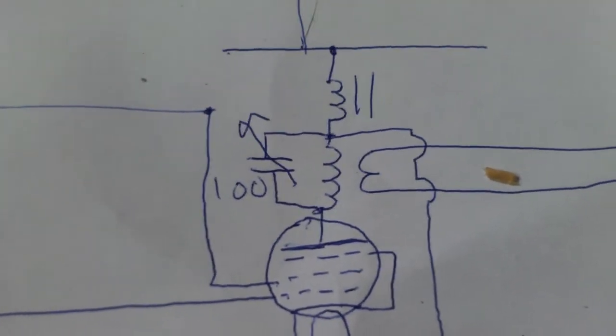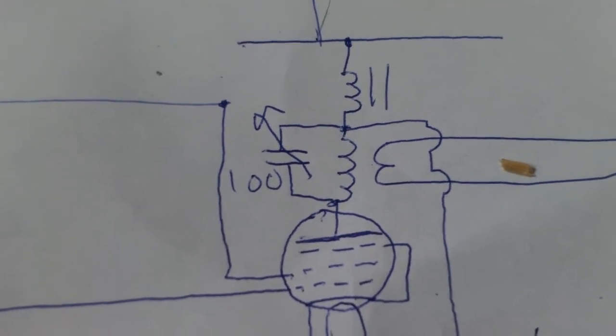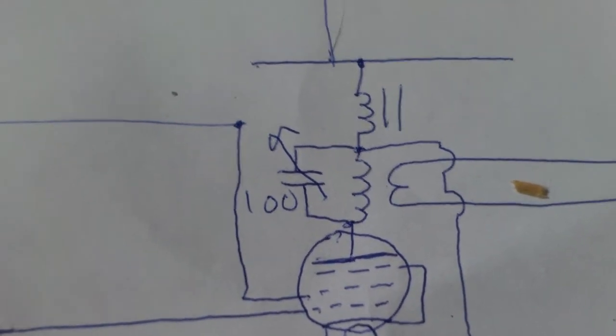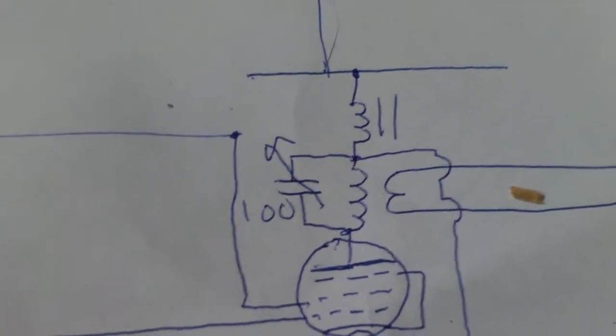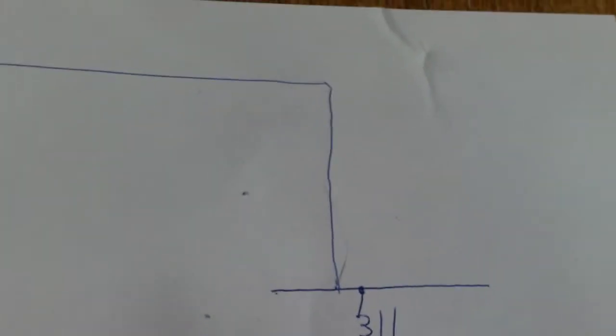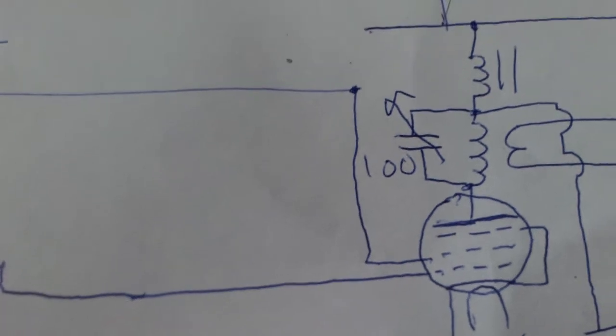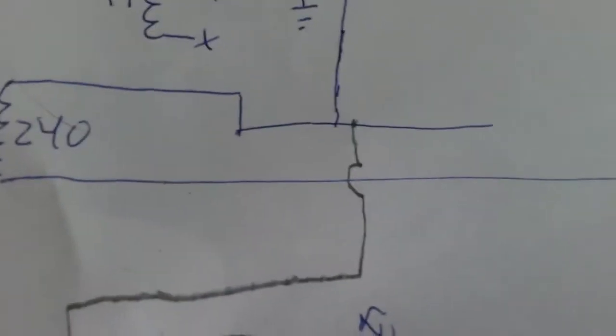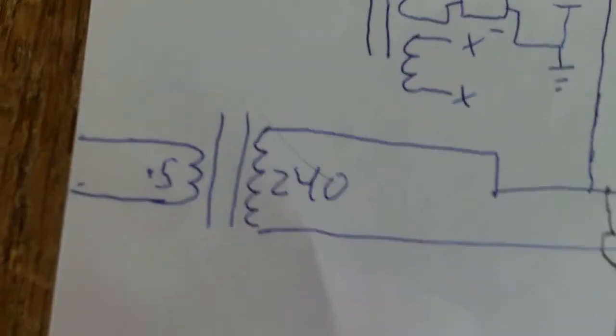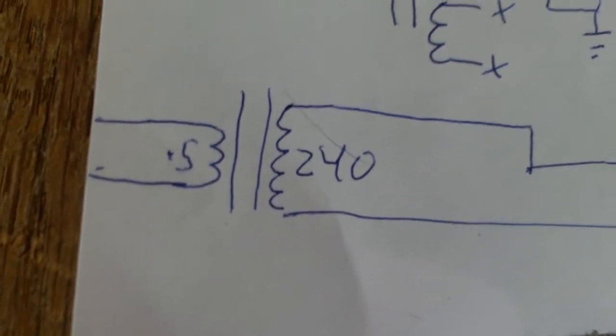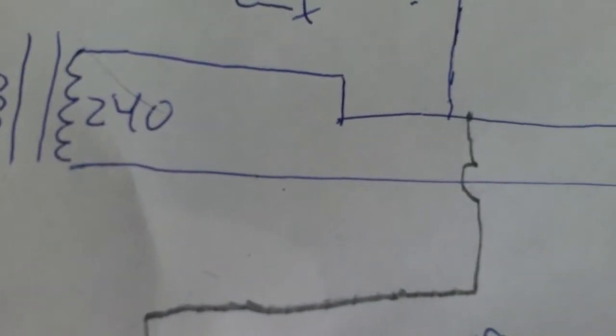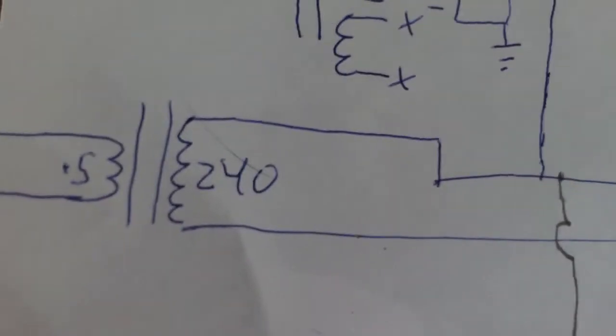So you see up here, just a coil and the capacitor to achieve resonance. And then a tap, and an RF choke to 300 volts. And if we follow that screen grid, we find a 240 ohm to 0.5 ohm transformer that's going to plus 150 volts.